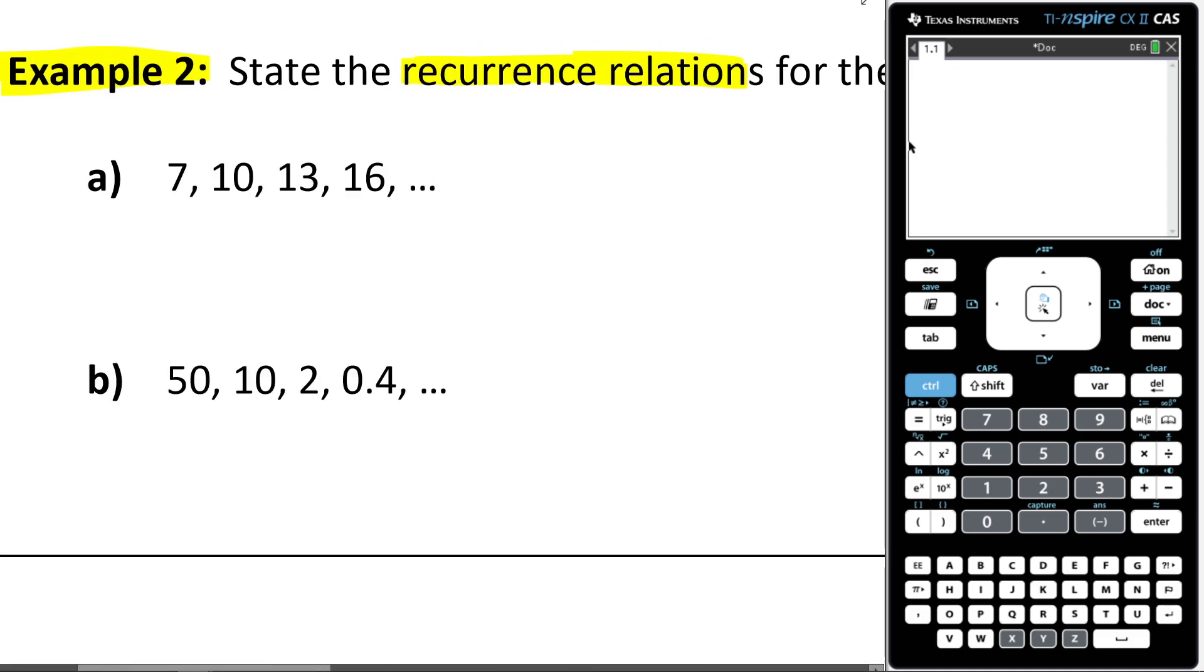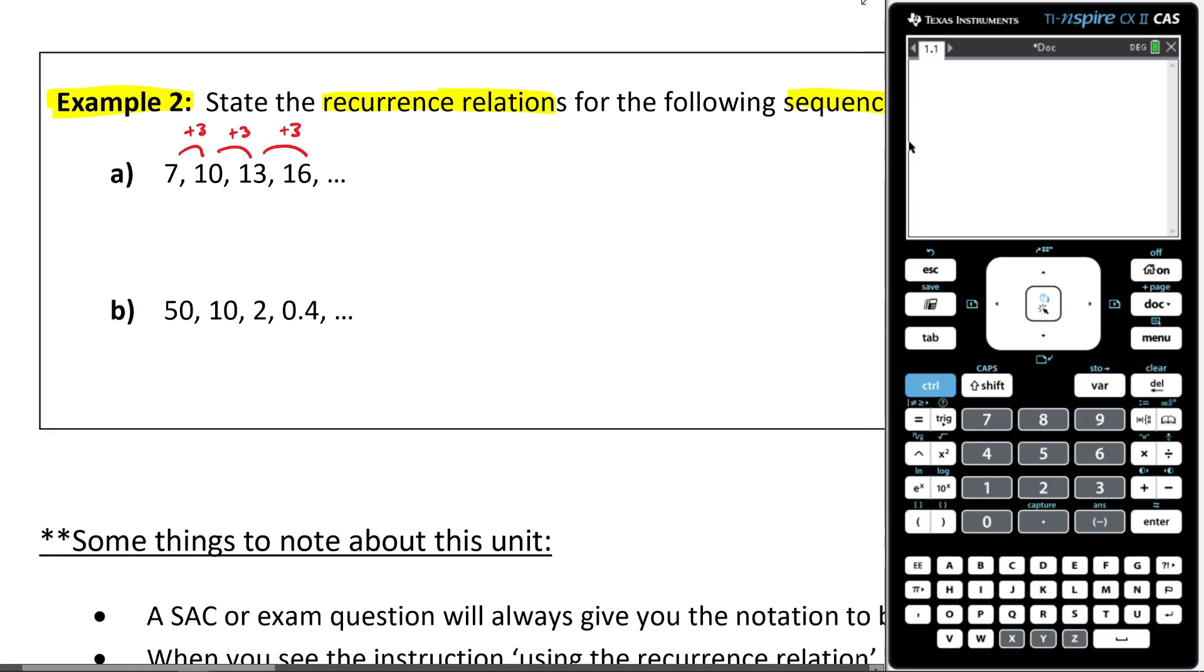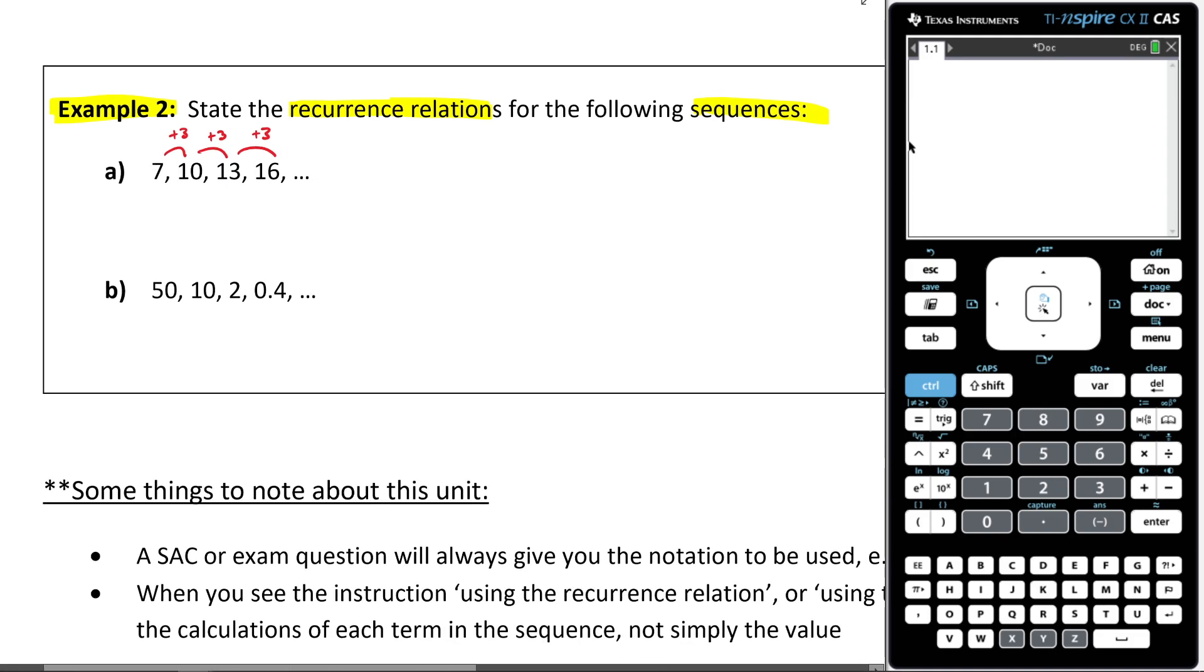Hopefully you can see that each time we are clearly plussing three. So that means if I wanna write down what my recursion relationship is, I'm going to be keeping in mind that it's linear growth. Now, I'm going to choose a letter here. I'm going to use the letter P. So what I'm saying here is I'm saying P of zero. So my initial value is seven.